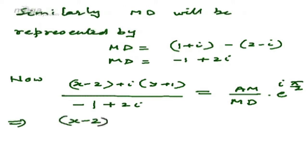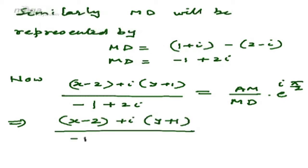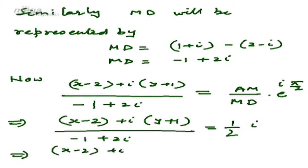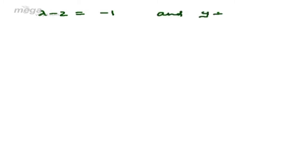So (x-2) + i(y+1) divided by (-1+2i) equals (1/2) · e^(iπ/2), which equals (1/2)i. Multiplying the denominator gives (x-2) + i(y+1) = (-1/2)i·(-1+2i) = -1 - (1/2)i. Comparing real and imaginary parts: x-2 = -1 and y+1 = -1/2, so x = 1 and y = -3/2.